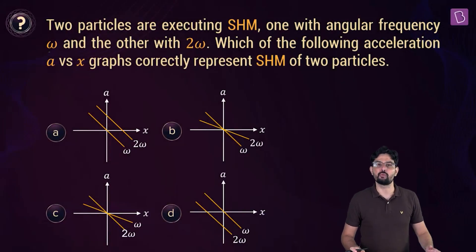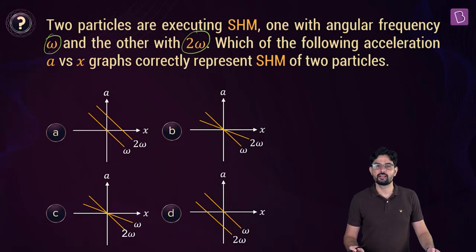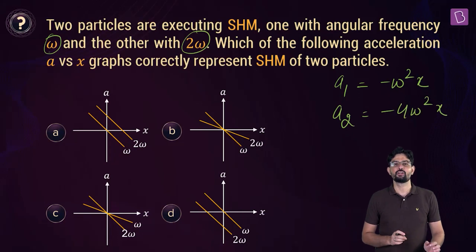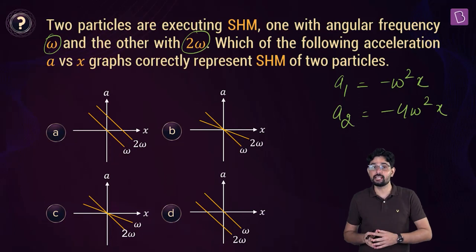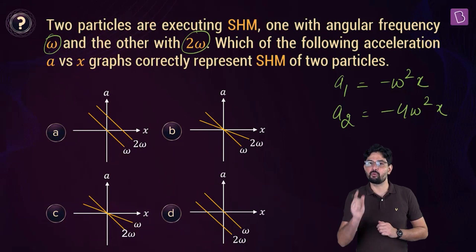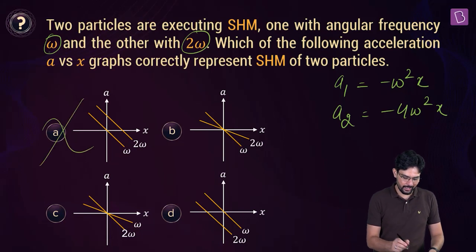So two particles are executing simple harmonic motion. The first one has the angular frequency omega, and the second one has an angular frequency 2 omega. You have to tell which of the following graphs, which are plotted between A and X, correctly represent the SHM of these two particles. So for particle 1, let's say its acceleration A1, this is going to be minus omega square X. And for particle 2, A2 is going to be minus 4 omega square X. So for both the particles, the acceleration varies linearly with X. And can you see for both of them, when X is 0, then acceleration is also 0. So A versus X graph for both the particles will be a straight line passing through origin. And by this logic, you can discard option A and option D.